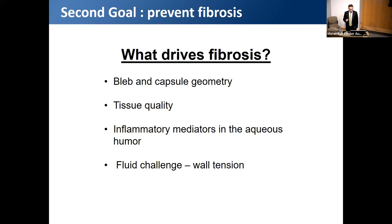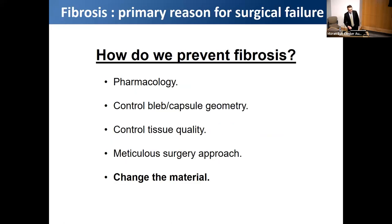Before moving on, let's discuss what drives fibrosis in filtering glaucoma surgeries. Known drivers include bleb and capsule geometry, tissue quality and inflammatory mediators in the anterior chamber, and fluid challenge and wall tension within the bleb. We battle fibrosis pharmacologically using antifibrotics at the time of surgery, steroids post-operatively, and by controlling bleb geometry, tissue quality, and meticulous surgical technique. Today I'm going to talk about changing the material of our implants.